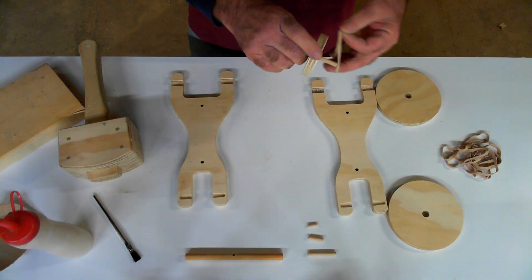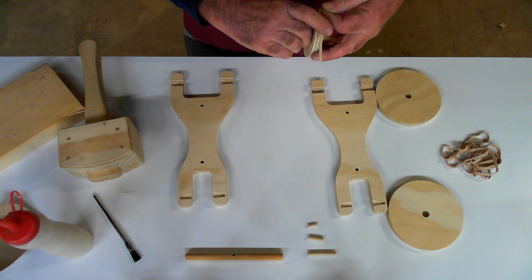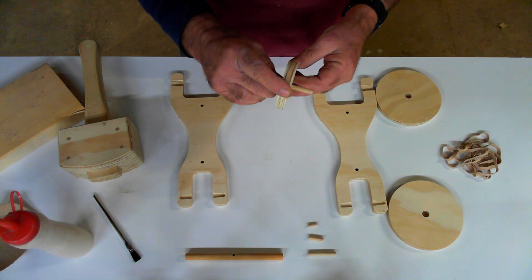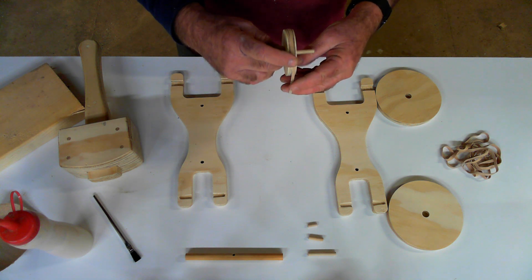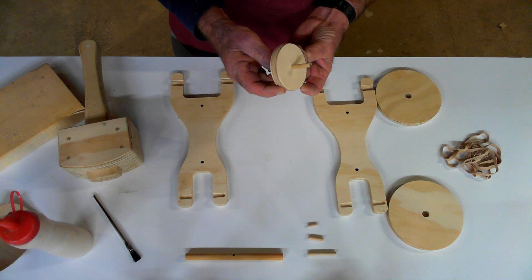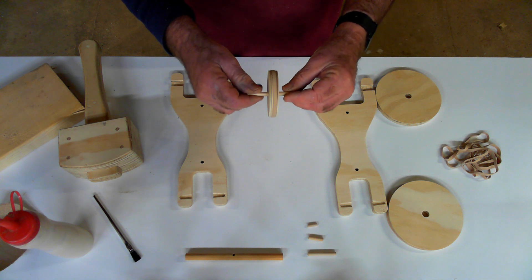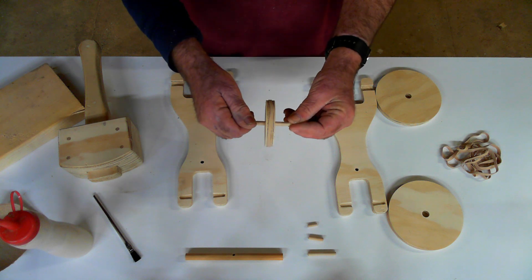So you also want to put a rubber band around for a tire. And this can actually be kind of a struggle, but just be careful with it and it'll stay on there. And once you put the front wheel in place, it's hard to get the rubber band on. So you want to do that first.